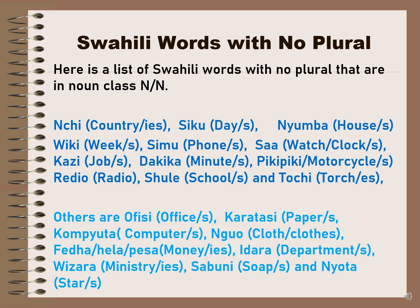Others are 'ofisi,' which means office or offices. 'Karatasi' can be paper or papers. 'Kompyuta' is computer or computers. 'Nguo' is cloth and clothes. 'Fetha,' 'hela,' or 'pesa' all mean the same in Swahili — money. The most commonly used words for money in Tanzania are 'fetha' and 'hela'; 'pesa' is rarely used, less than 10%. 'Idara' is department or departments. 'Wizara' is ministry or ministries. 'Sabuni' is soap or soaps. 'Nyota' means star or stars.